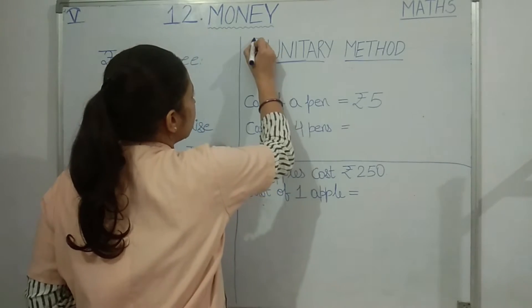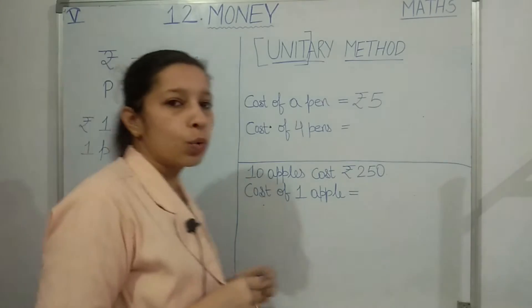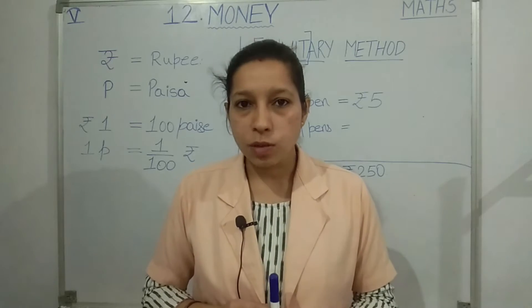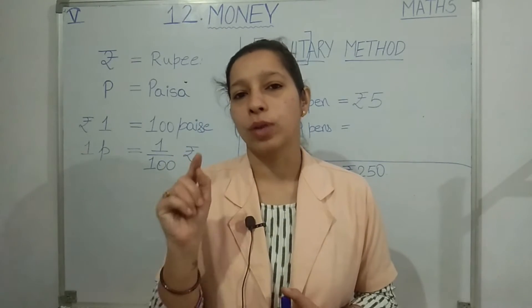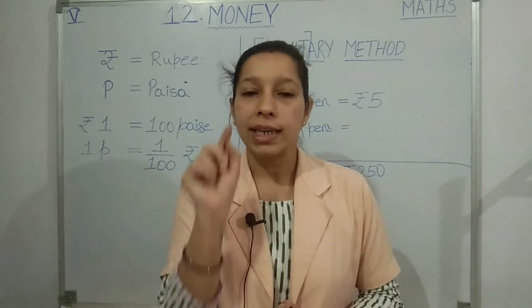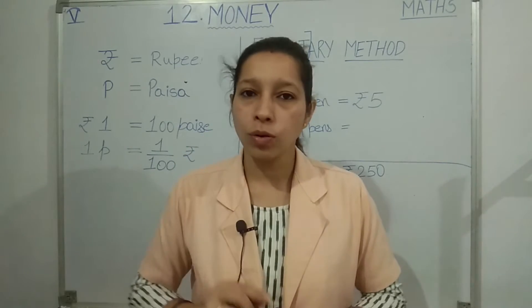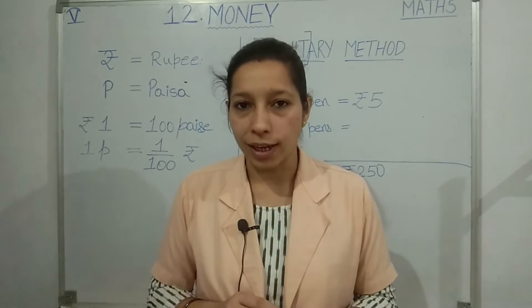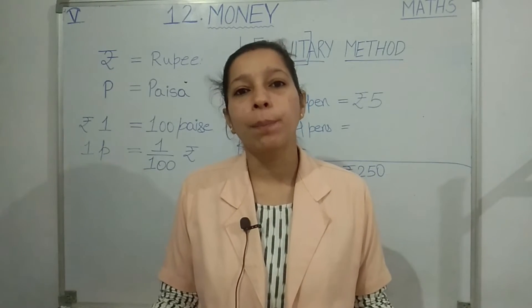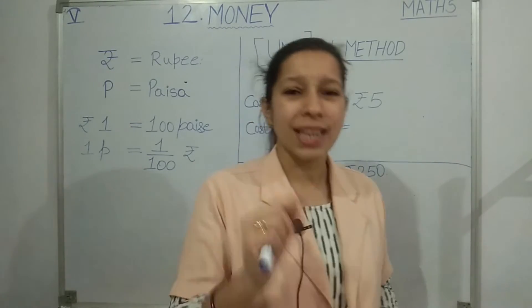What is the unitary method? See these four letters - 'unit' means one. Unitary method means we use this method to find the value of a single unit. We use unitary method to find the value of one unit - kisi ek cheez ka amount pata lagane ke liye. After finding the value of one unit, we can find the value for multiple units. Single unit means only one; multiple unit means many units.